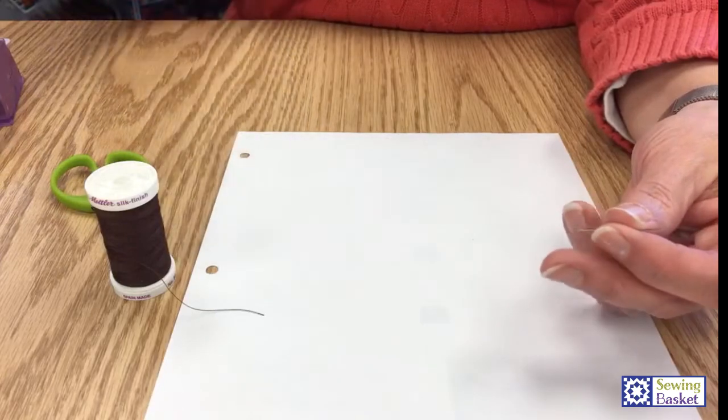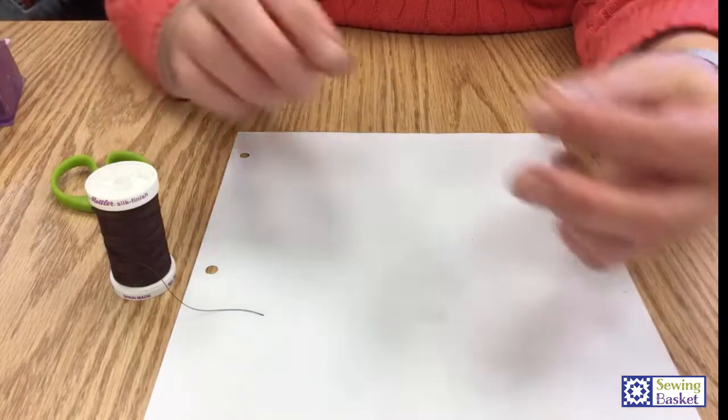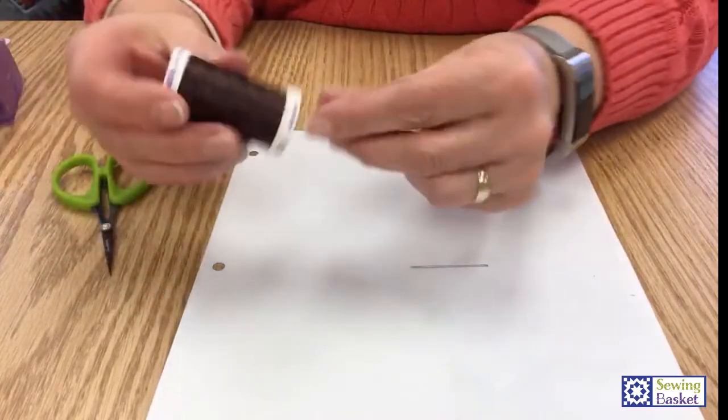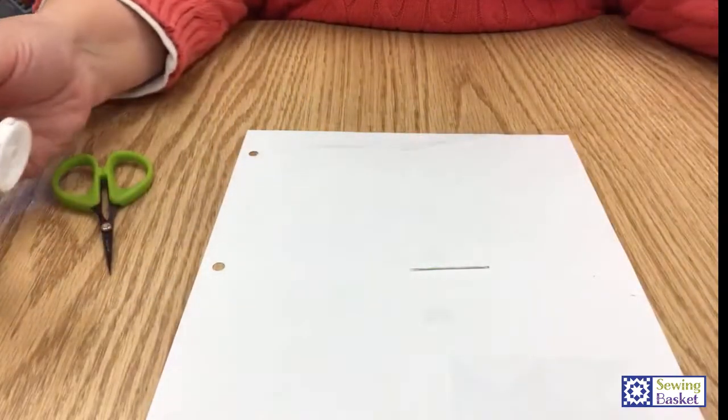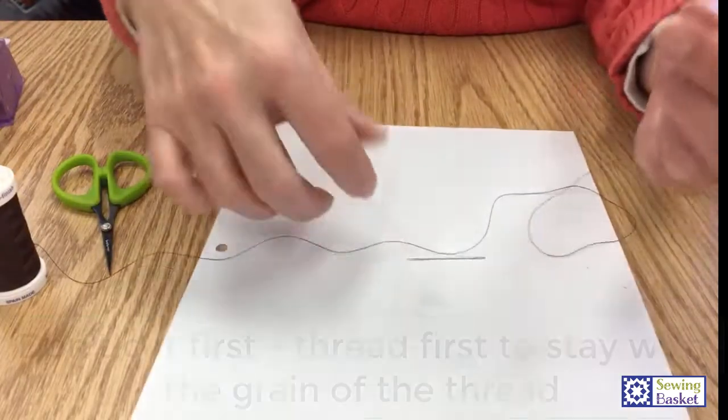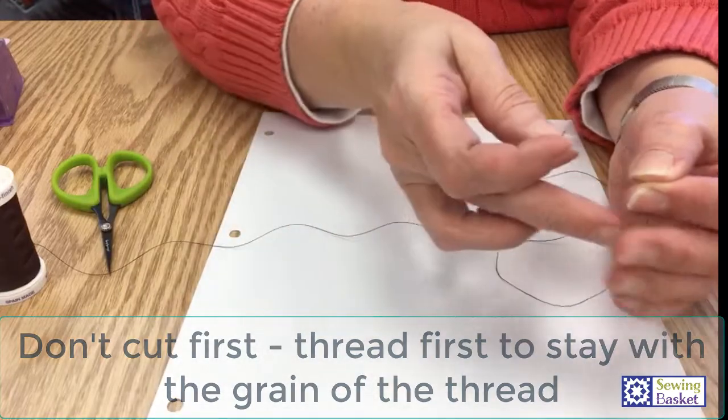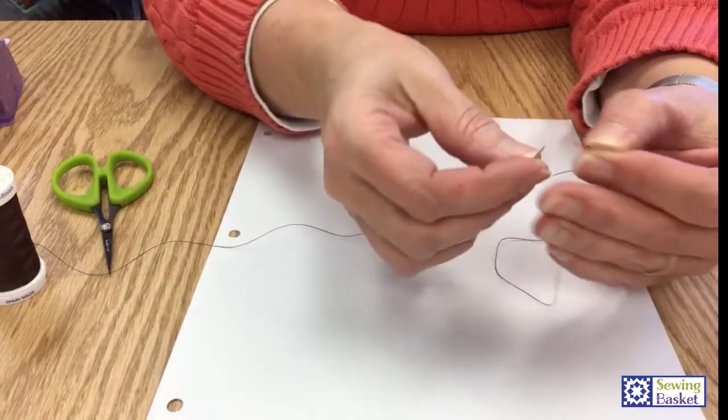So the better way to do it is don't cut your thread. Take the thread but don't cut it, and we're going to thread the needle first. Then I know that I have my lead end of the thread in the direction I want it to be.